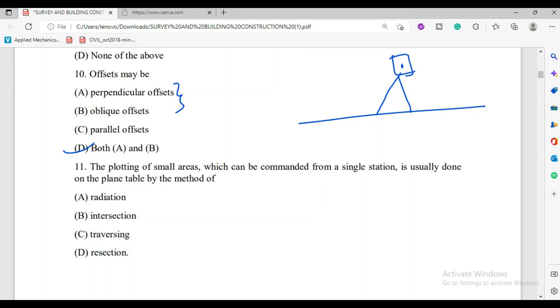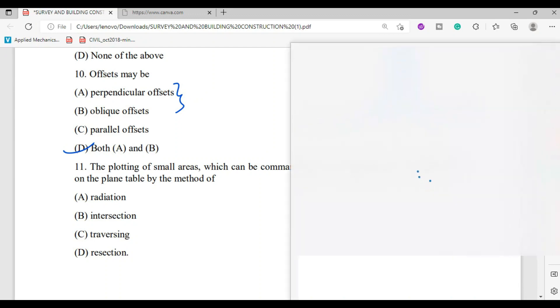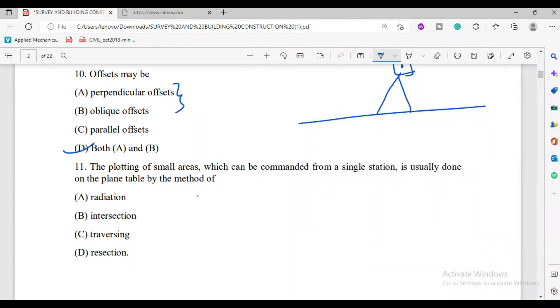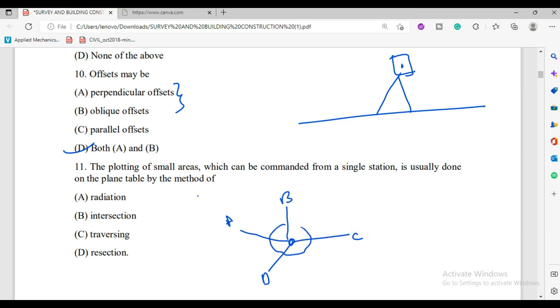The plotting of small areas which can be commanded in single station is usually done on plane table by the method of radiation. Because from a single station, all points A, B, C, D are visible. I bisect to point A, bisect, bisect, and ultimately develop the map. So for a single station, use radiation. Intersection uses two stations. Traversing uses multiple stations.